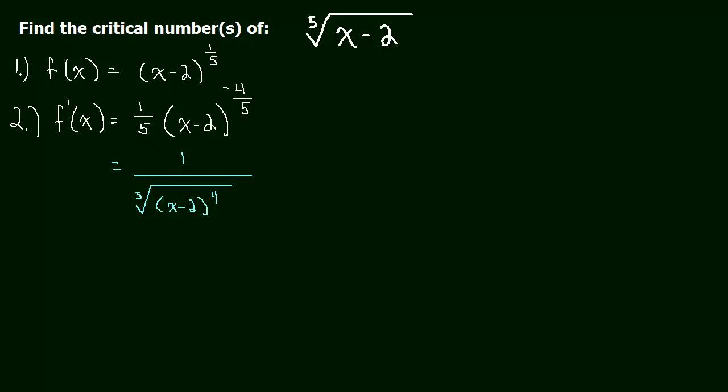And we've talked about this in a previous video. If the numerator is a constant, the function can never be zero because the denominator can't make a function zero. So the only time that this will have a critical number is when it doesn't exist, and that will happen when the denominator is zero.